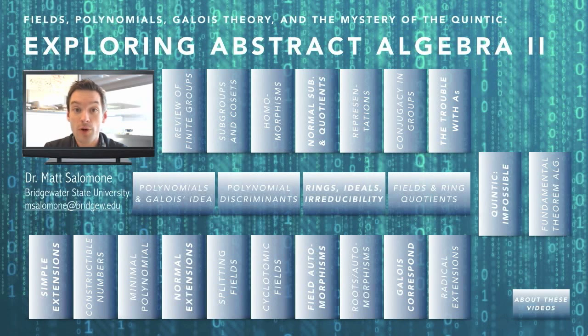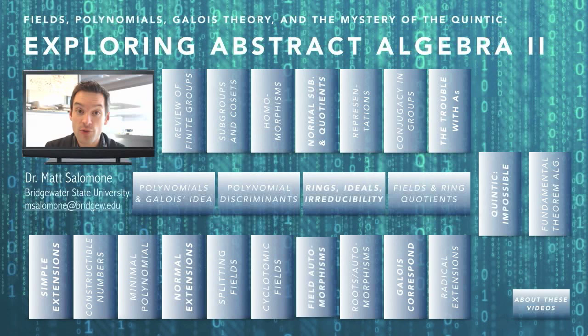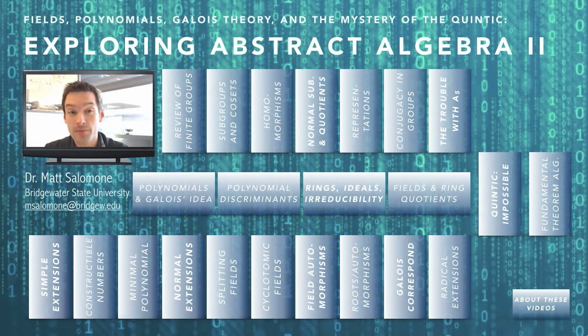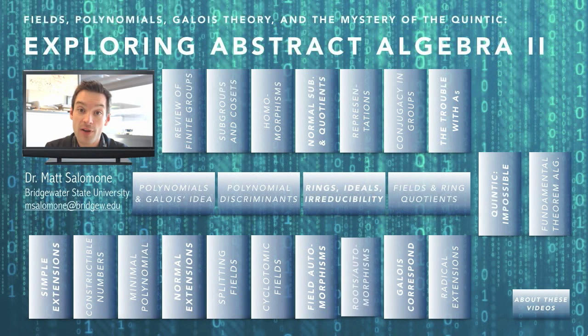Then we'll look at the all-important concept of field automorphisms. How do we think of what the symmetries of a field are in a particular way that helps us understand the structure of that field? We'll look at how automorphisms behave with respect to the roots of polynomials, specifically how automorphisms permute the roots of polynomials over a base.